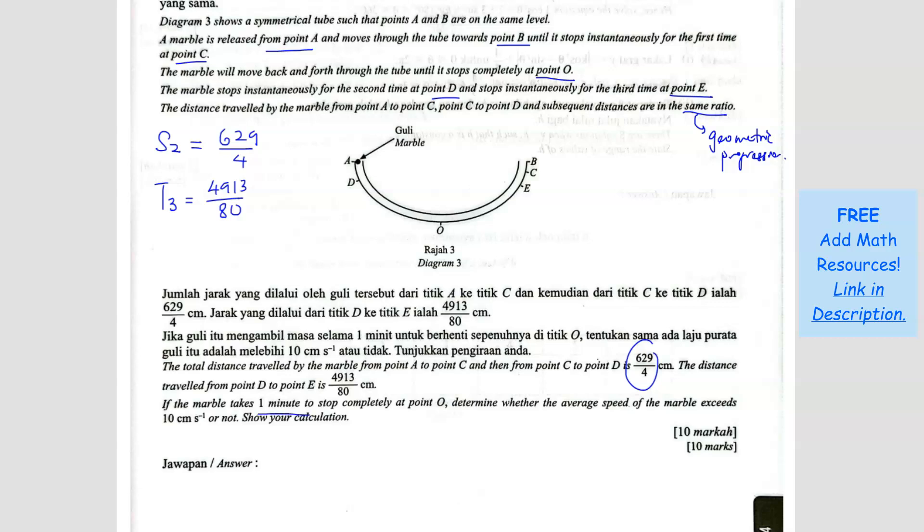If the marble takes 1 minute to stop completely at point O, that means it keeps going left and right until after 1 minute, it lands at 0 and stops. The question asks: determine whether the average speed exceeds 10 cm per second. So they are asking us to find the speed. To find the speed, we need distance over time. The time is already given, 1 minute, so we have to find the total distance travelled.